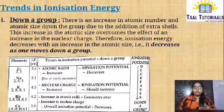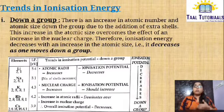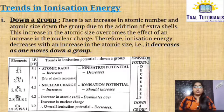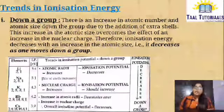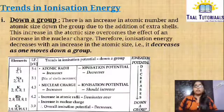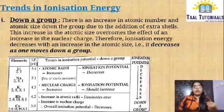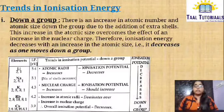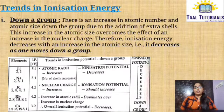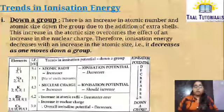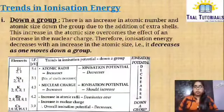As atomic radius increases, the effective nuclear charge decreases. Therefore, Ionization Energy decreases with an increase in atomic size. Coming from top to bottom, atomic size is increasing and thus ionization energy is decreasing — that is, there is a decrease in ionization energy down a group.